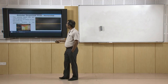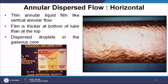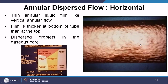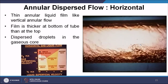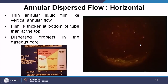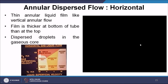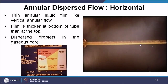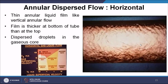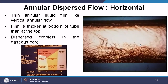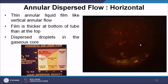Another horizontal flow pattern is annular dispersed flow. Here, a thick annular liquid film is present — thick at the bottom and thin at the top due to the horizontal orientation. Dispersed liquid droplets are found in the gaseous core. This pattern is obtained at further higher gas superficial velocities while keeping the liquid superficial velocity the same.